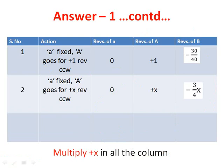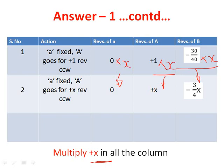The second step is to multiply plus X in all the cells of the table. So arm becomes 0 times X which is 0, gear A becomes plus 1 times X which is plus X, and gear B becomes minus 3 by 4 times X, giving minus 3 by 4 X.